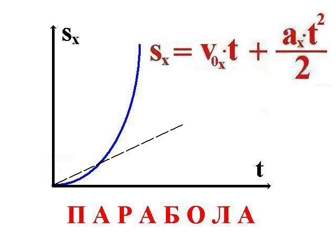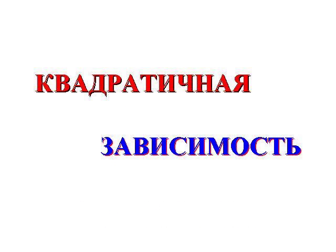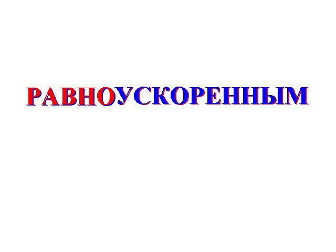At² over 2 plus v₀ times t. This formula in all its beauty. And so, as we see, as a result, for s we get time squared. The graph grows faster than a straight line. The parabola's rise is quite steep. Yes, the graph for s is steep. This motion is called accelerated.